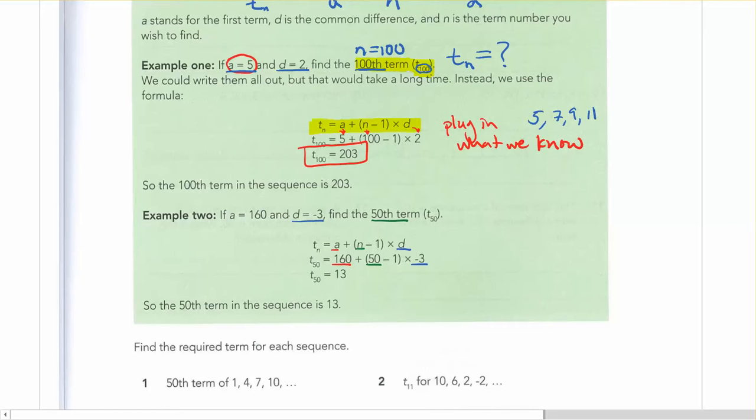So the first term is 160, but the 50th term is 13, because it's going down by 3. Remember that negative there means down by 3, or subtracting 3 each time.